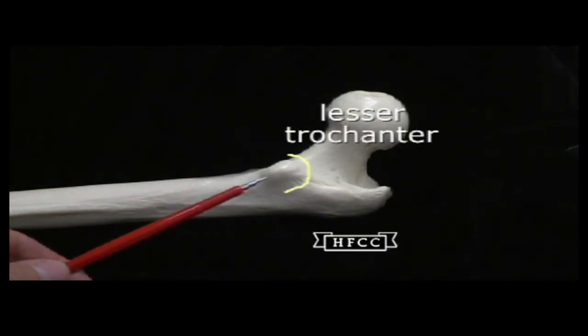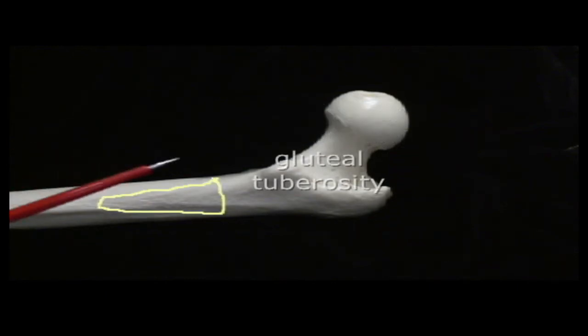And the one that's going to show up more prominent now is the lesser trochanter, in this posterior view. It's a more posterior structure but we saw it a little bit on the anterior.